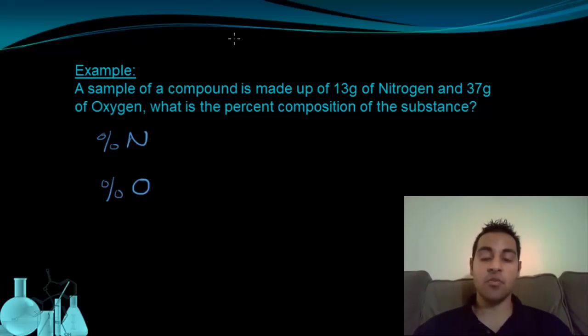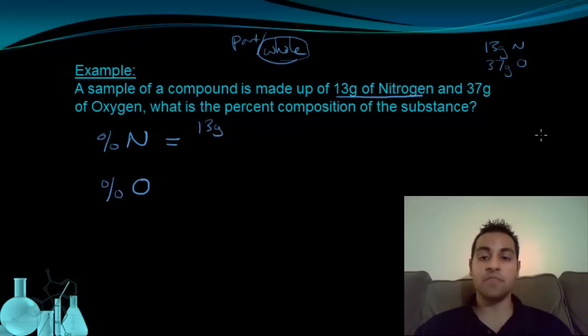And remember the idea that this whole thing is basically the part out of the whole. So let's look at nitrogen first. Well I know the mass that's nitrogen because it tells me right here. Of this substance, 13 grams of it is nitrogen. But I need to know what the whole thing is. Now this substance is made up of 13 grams of nitrogen, so 13 grams of nitrogen, and 37 grams of oxygen. If I combine these two, that's going to give me 50 grams of the total substance. That's the total mass of the substance.